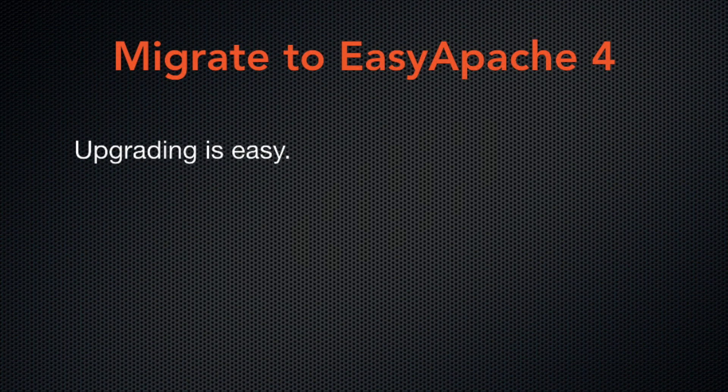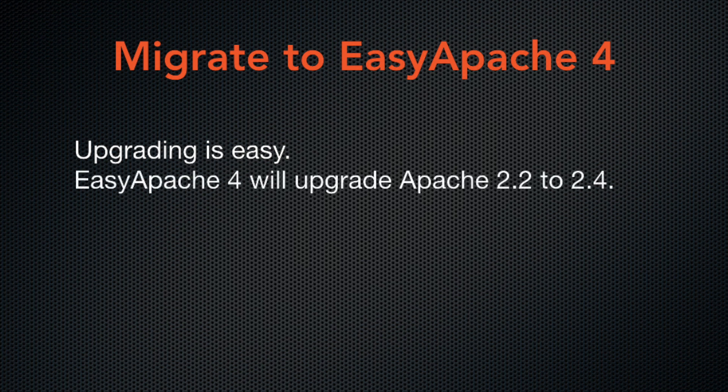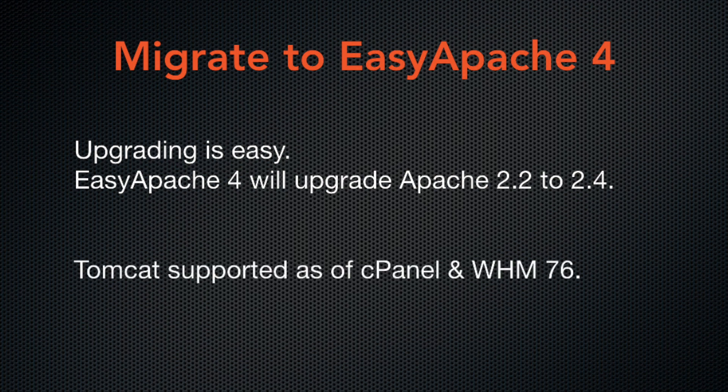You should be able to upgrade easily without worrying about compatibility issues. If your system still runs Apache 2.2, we'll attempt to upgrade your system during the migration process. As of cPanel and WHM version 76, you can also migrate to Easy Apache 4 if you run Tomcat. Our Tomcat implementation is completely new. For more information, you can read our Tomcat documentation.